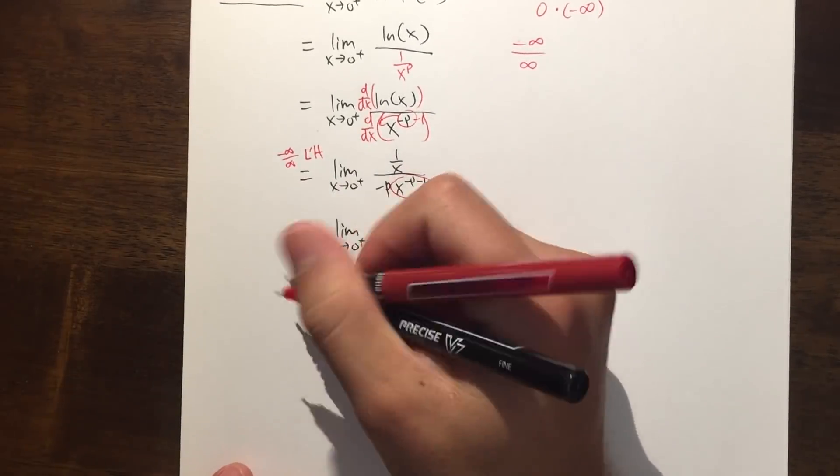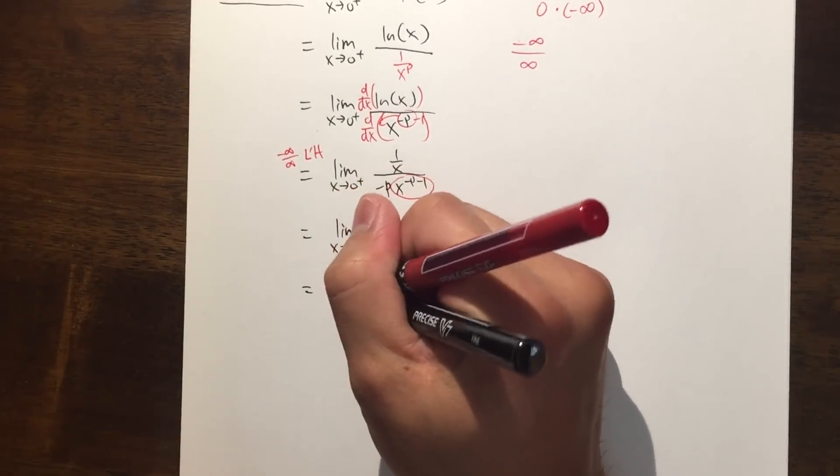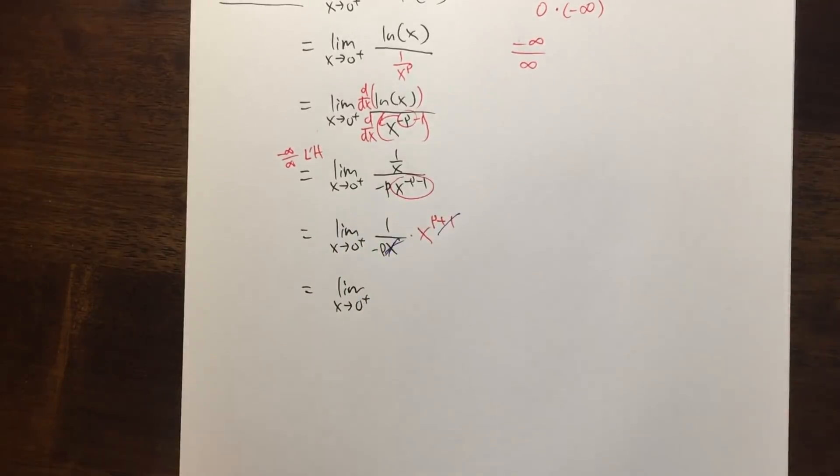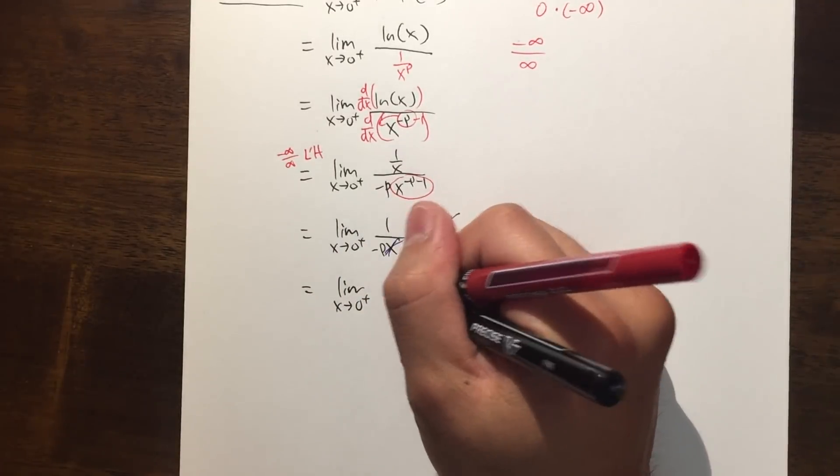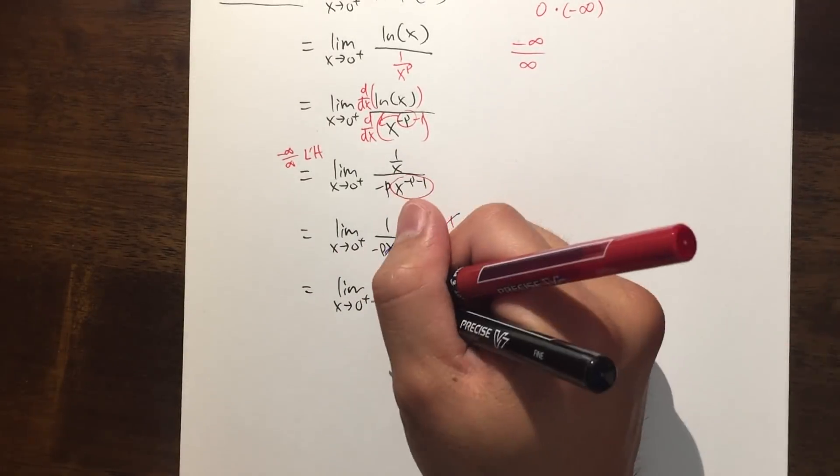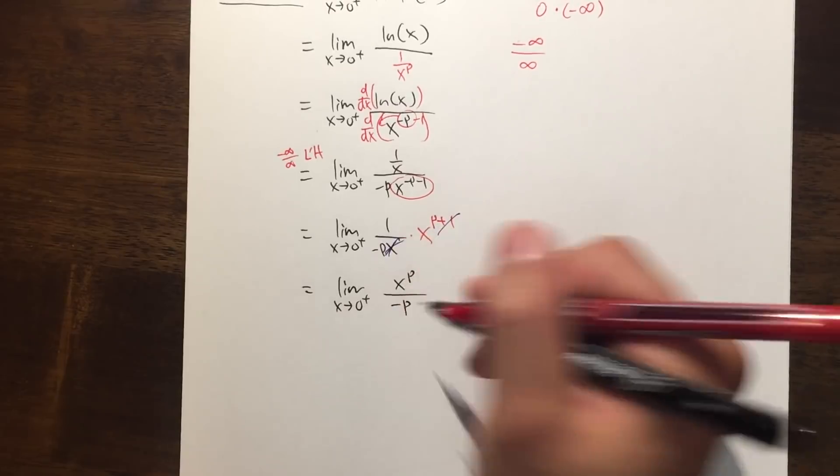So, in another word, this is just the limit as x goes to 0 plus. On the top, it's just x to the p's power over negative p on the bottom.